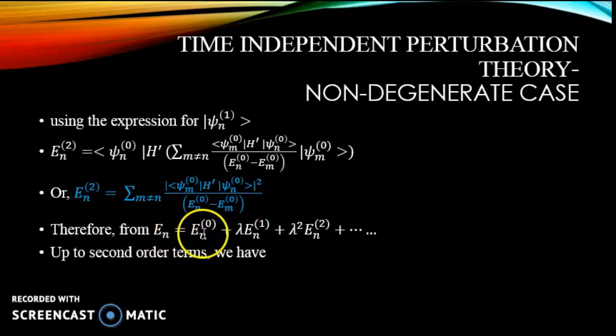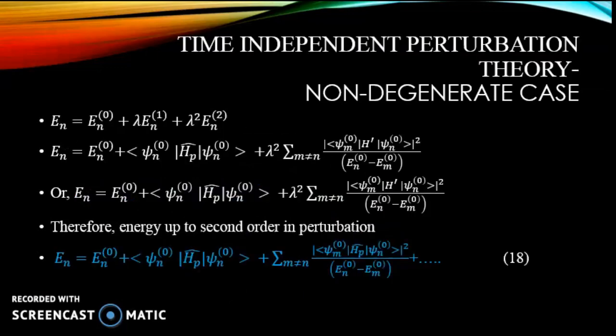limiting up to the second order term only, we have E_n equal to E_n^(0) plus λE_n^(1) plus λ²E_n^(2).